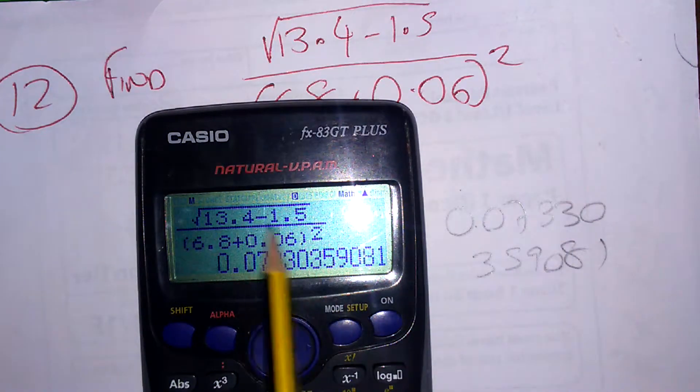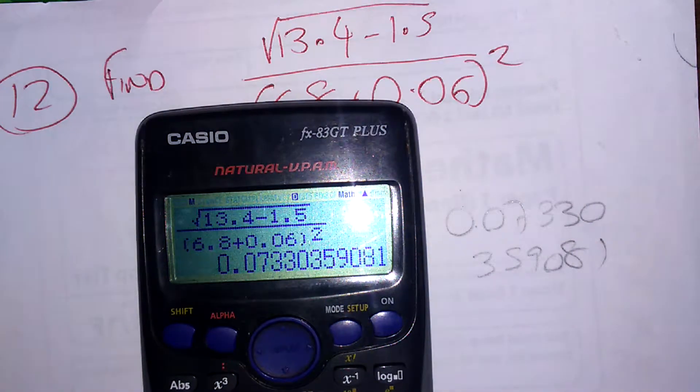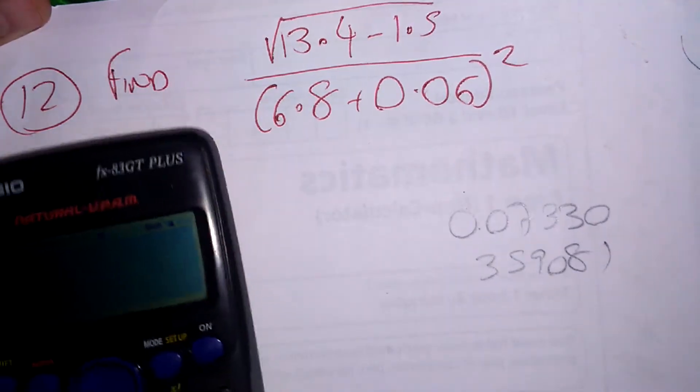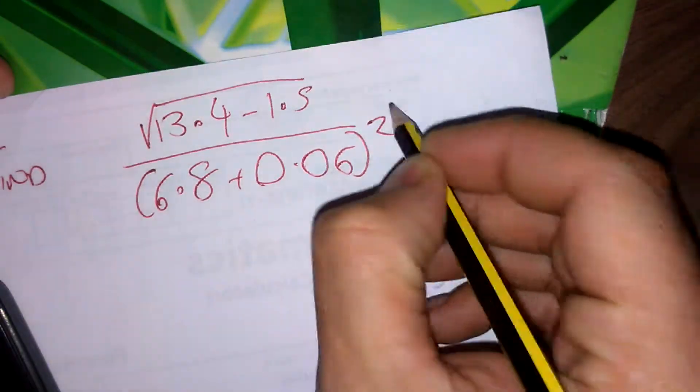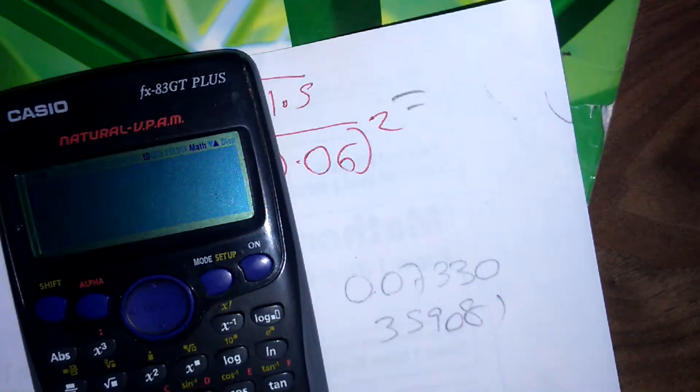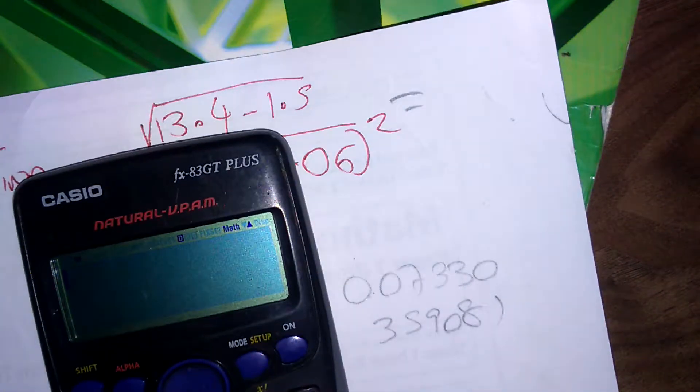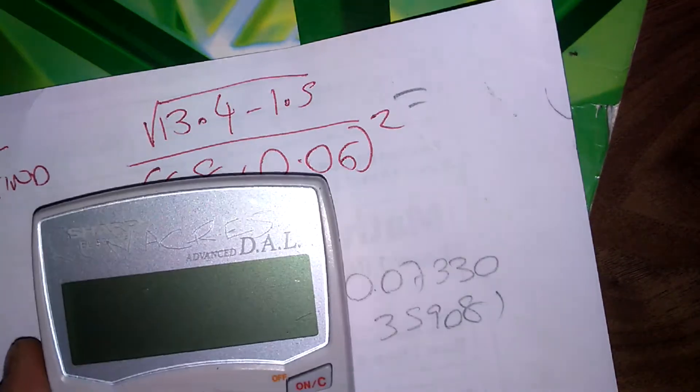Sometimes this will give it in a weird form, so as a fraction press S to D. Now, if you haven't got a decent calculator, what you've got to do is do the numerator and then do the denominator separately. So let's say I've got this budget calculator.